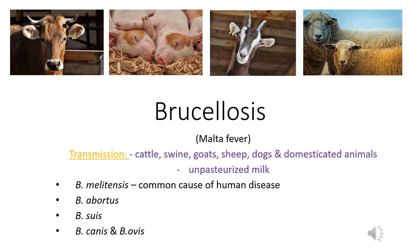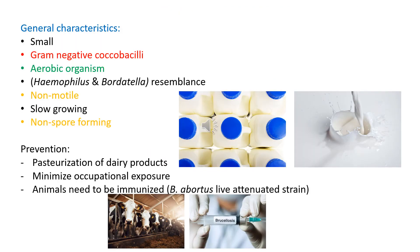Different types of Brucellosis include Brucella melitensis, which is seen as a common cause of human disease, Brucella abortus, Brucella suis, Brucella canis, and Brucella ovis. It is a small gram-negative coccobacillus, additionally aerobic in nature with Haemophilus and Bordetella resemblance.